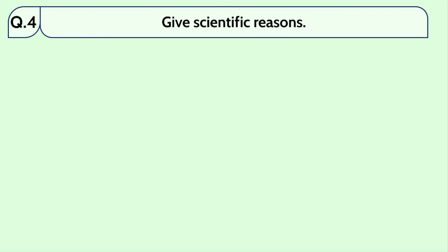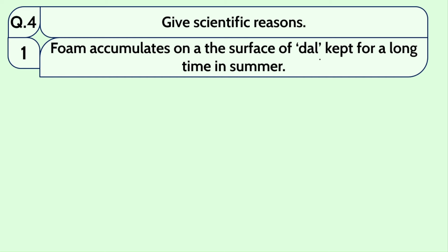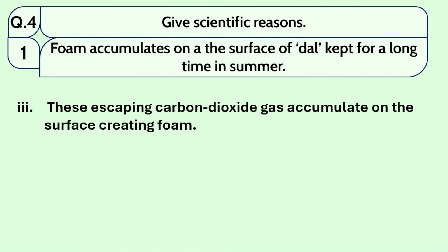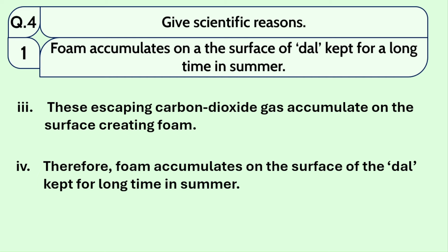Question number 4, give scientific reasons. Number 1: foam accumulates on the surface of dal kept for a long time in summer. Point one is that dal is rich in proteins. When dal is kept for a long time, bacteria attack and cause fermentation, resulting in the production of carbon dioxide gas. These escaping carbon dioxide gas accumulates on the surface and foam is created. Therefore, foam accumulates on the surface of dal kept for a long time in summer.